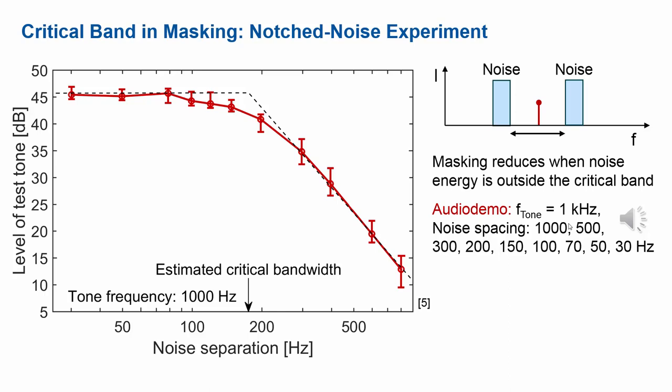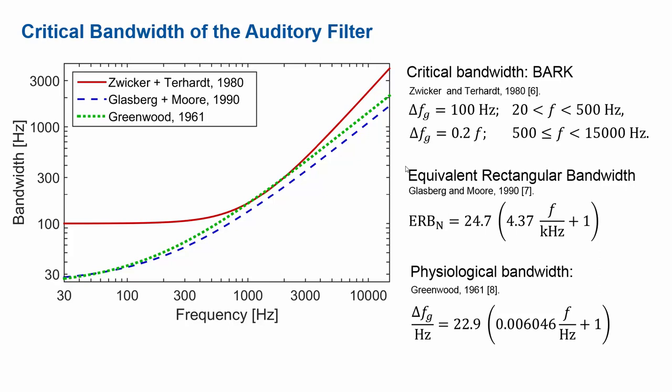Now we have all the ingredients and all the ways to measure the critical bandwidth. Let's first look at the critical bandwidth as defined by Zwicker — the Bark scale. Zwicker defined the Bark scale to be about 100 hertz wide at low frequencies and about 20% of the center frequency of your filter at high frequencies. High means here above 500 hertz. So at low frequencies he assumes about constant absolute bandwidth, and at high frequencies about constant relative bandwidth.